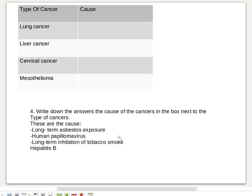Number four question is not really a question which is telling you that write down the answers, the cause of the cancers, in the box next to the type of cancers. So you put your answer here. This is the type of cancer here: lung cancer, liver cancer, cervical cancer. And you put the answer here, what is the cause of the lung cancer. So lung cancer cause is long-term tobacco smoke.